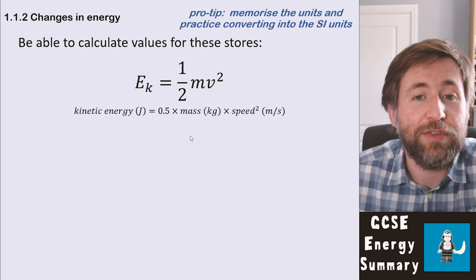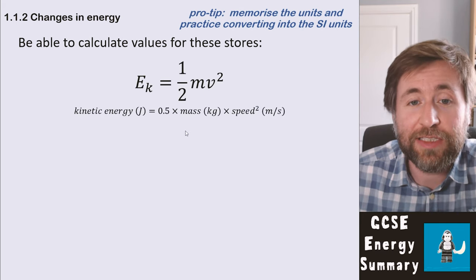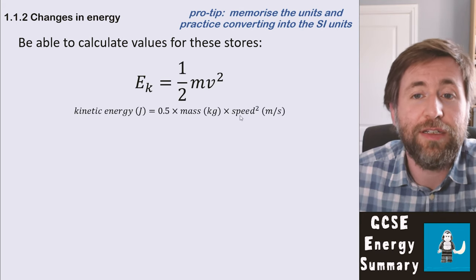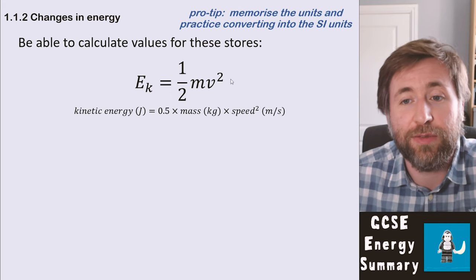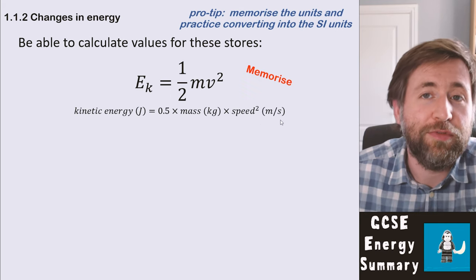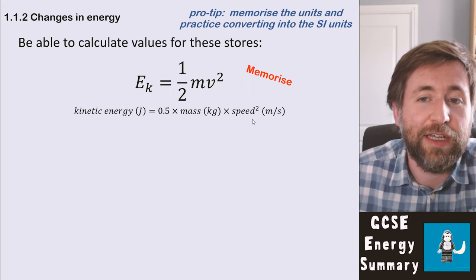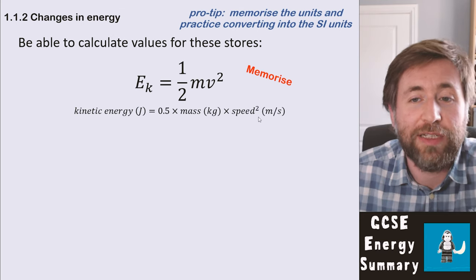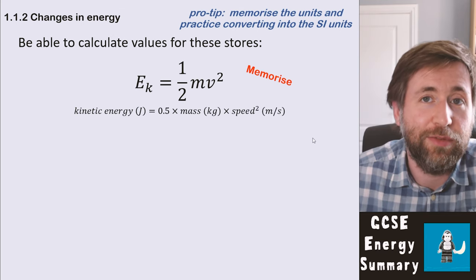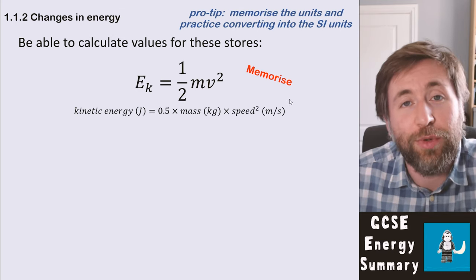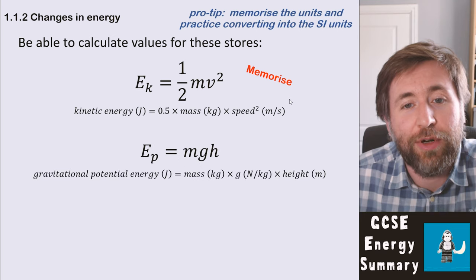This is the kinetic store. Kinetic energy is a half times the mass times the speed squared. Don't be confused by the squared at the end — you just need to type that into the calculator with values instead of mass and speed, and your calculator will do the thinking. That is one you do need to memorize.